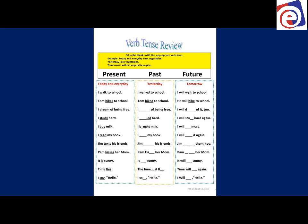We're going to practice present, past, and future. Focus on pronunciation and saying the final consonant. 'I walk to school. I walked to school. I will walk to school.' 'Walked' is spelled W-A-L-K-E-D — think 'walk' then add 'ed,' but the D sounds like a T: walked.